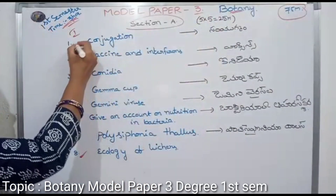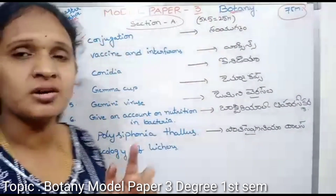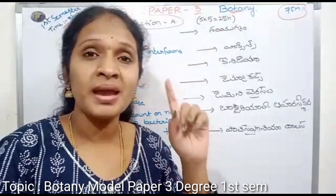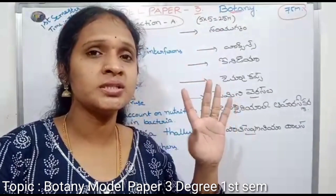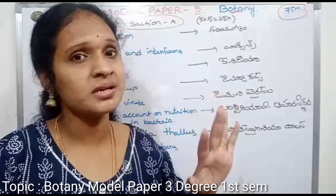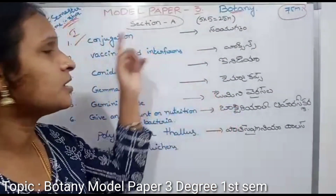The first question is conjugation — what is conjugation? Bacterial reproduction has three ways: conjugation, transformation, and transduction. The first one is conjugation.